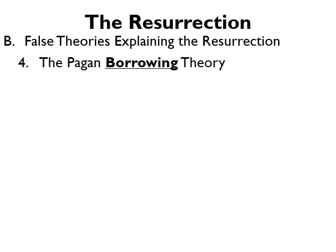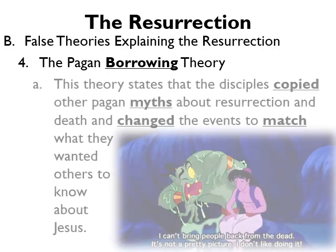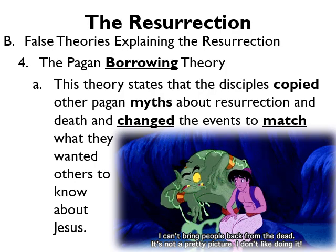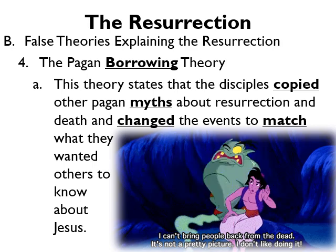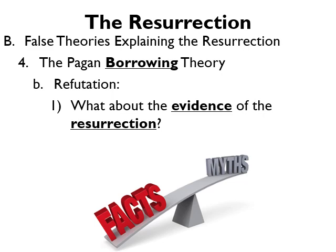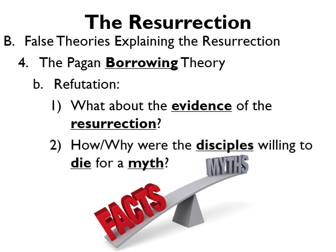The fourth and final false theory that we'll discuss in this course is known as the pagan borrowing theory. This theory states that the disciples copied other pagan myths about resurrection and death and changed the events to match what they wanted others to know about Jesus. Our first point to refute this false theory is the question: what about the evidence of the resurrection? And secondly, how or why were the disciples willing to die for a lie they made up? Surely a couple of them, if it was a lie, would have been willing to recant. But not everyone, and especially not to the extent of how many of them were murdered.